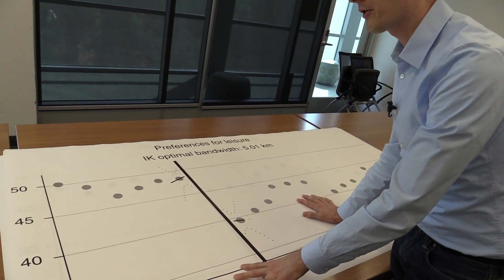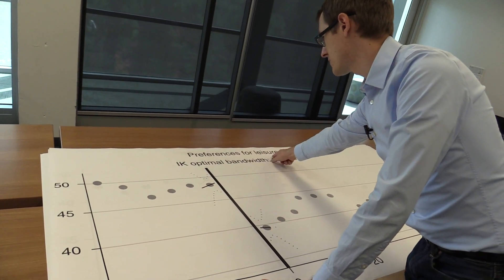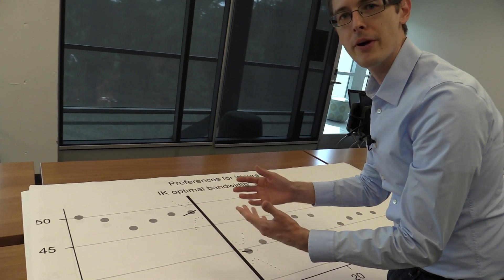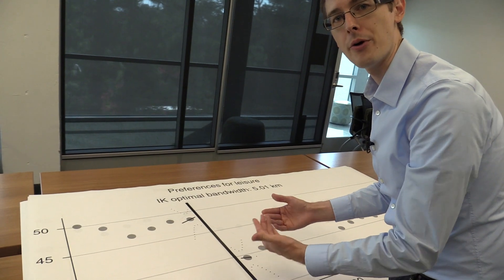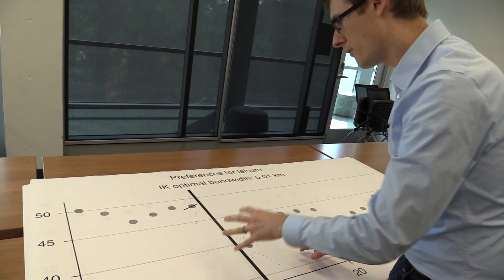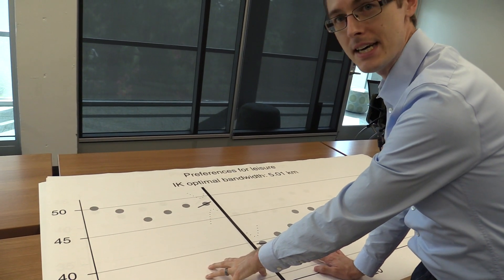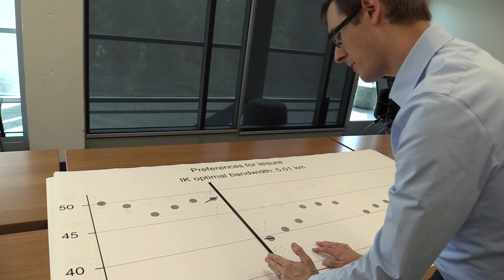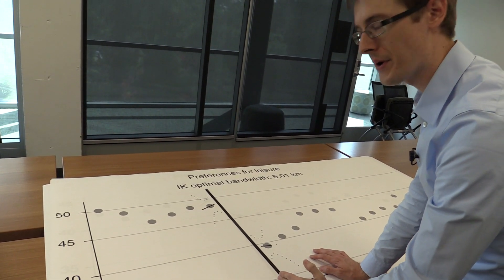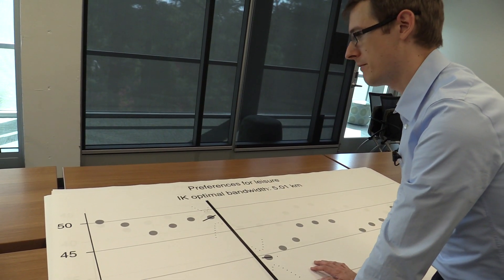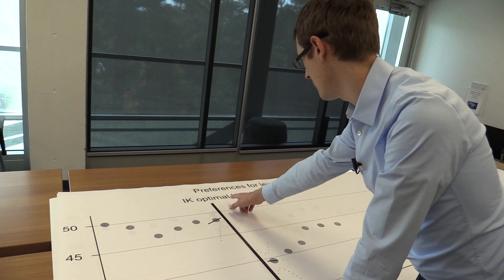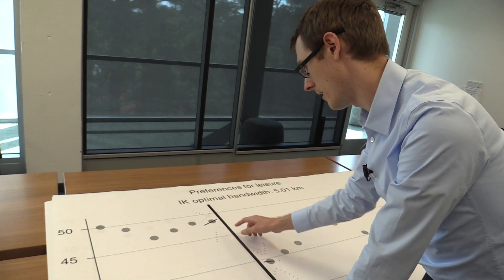So let's do that. So here I've got their group of referenda, preferences for leisure. So they've taken all the referenda that are like, should the official retirement age be lowered or not? So over here on the Catholic side, we see that if the town is really close to the border, it about 48% of the time votes for these leisure-based referenda.